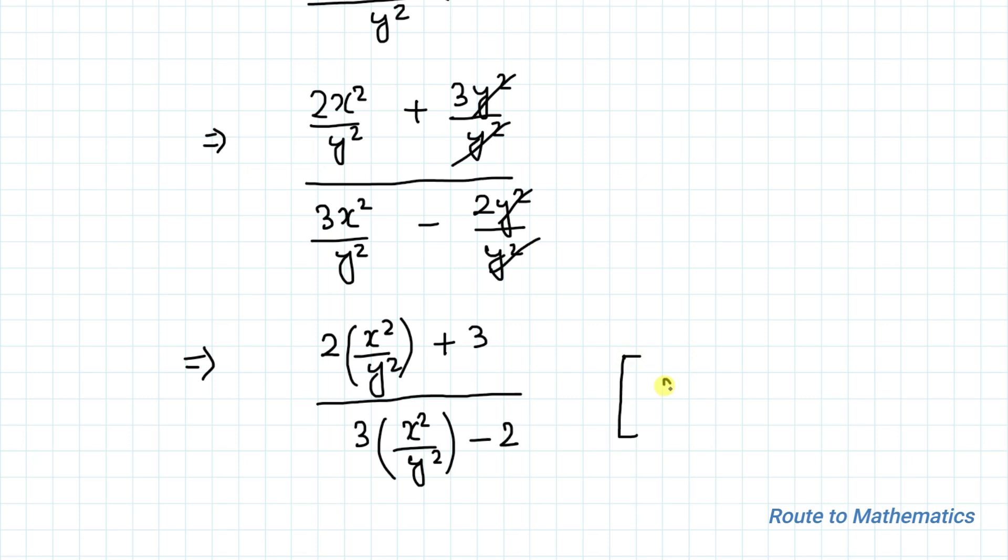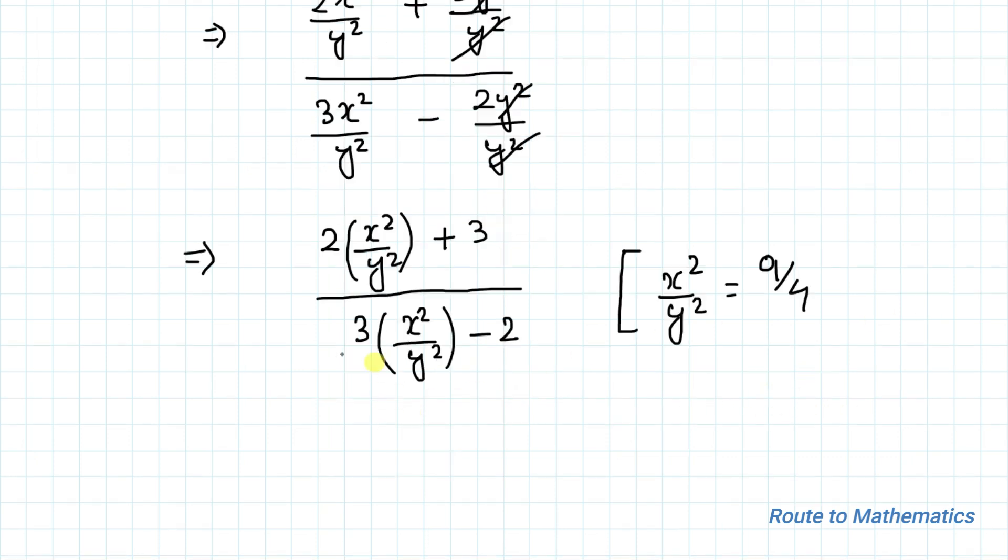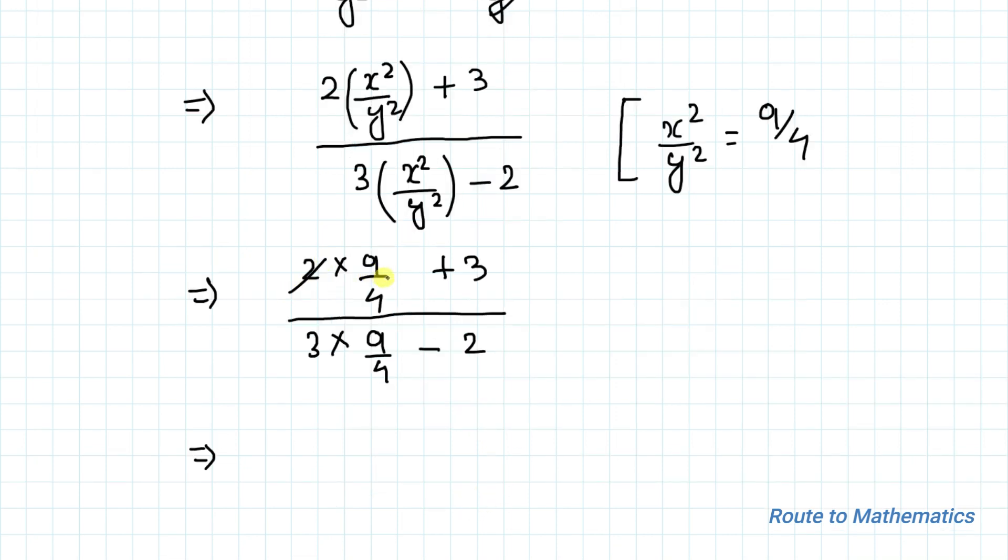So we already know the value of x square by y square equals to 9 by 4. So we will put this value here. So after putting the value, what we are getting is 2 multiplied by 9 by 4 plus 3 divided by 3 multiplied by 9 by 4 minus 2. So this 2 gets cancelled out. We have 9 by 2 plus 3 divided by 27 by 4 minus 2.